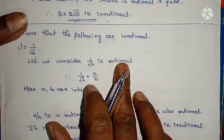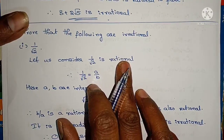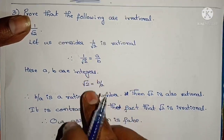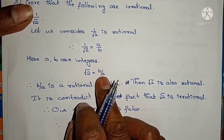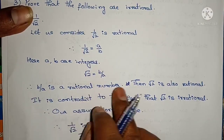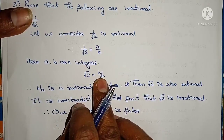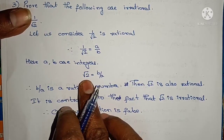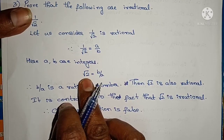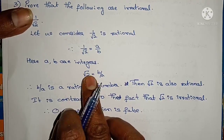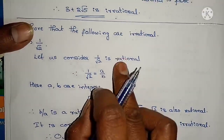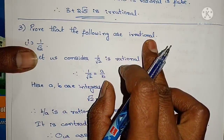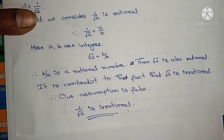To recap: I considered 1/√2 as rational and wrote it as a by b. Rearranging gives root 2 = b/a, which is a rational number. If root 2 is rational, that is a contradiction since root 2 is irrational. Therefore 1/√2 is irrational.